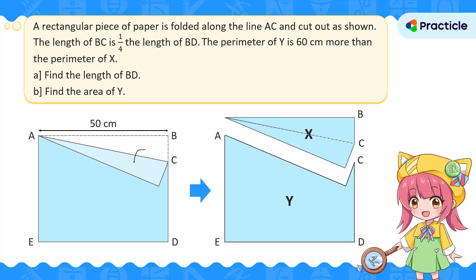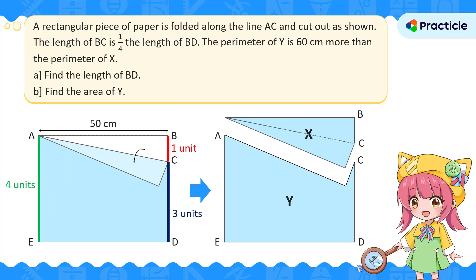We're given that the length of BC is one-quarter the length of BD. This means that when we compare BC to BD, we can represent BC with 1 unit and BD with 4 units. The length of CD can therefore be represented by 4 minus 1, which is 3 units. Let's shift the length of the 4 units to the other opposite side of the rectangular piece of paper.